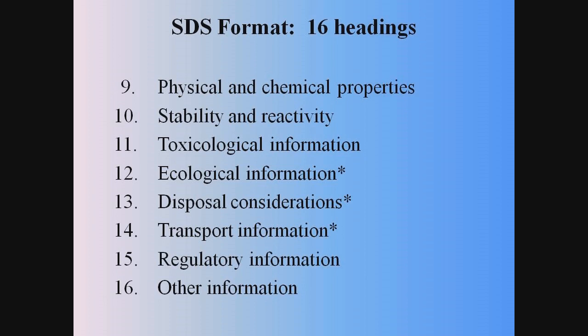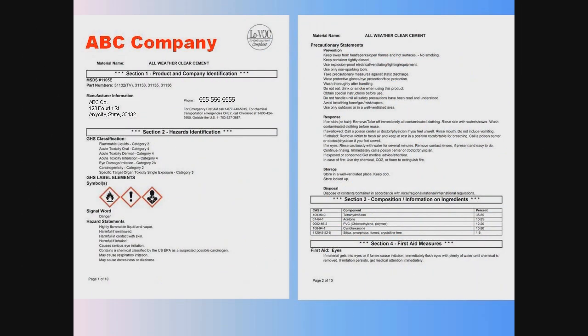Physical and chemical properties will be explained, followed by stability and reactivity information, and then toxicological information. The next three sections — ecological information, disposal considerations, and transport information — are not required by OSHA, but may be included in the safety data sheet. The last two sections will be regulatory information, and then any other information deemed pertinent by the manufacturer or an outside regulatory agency. Here are the first two pages of a sample safety data sheet. Note the specific sections — all safety data sheets will have the sections or headings in this order and format, which will make finding specific information much easier.